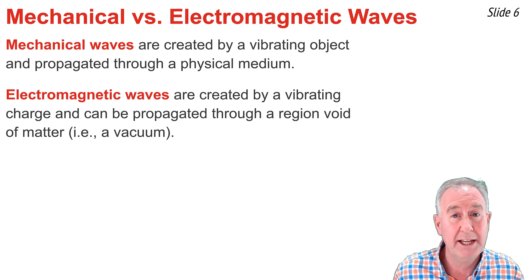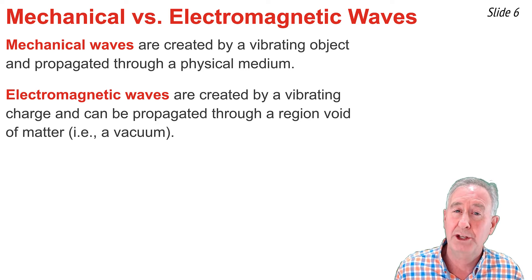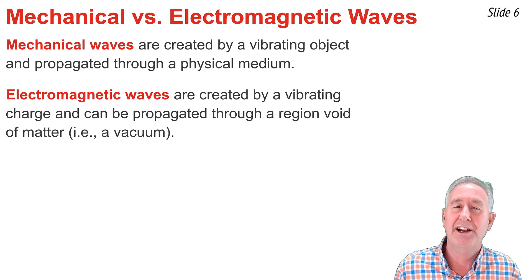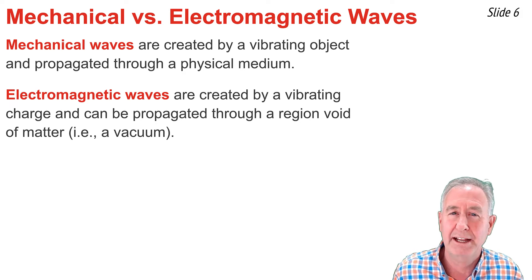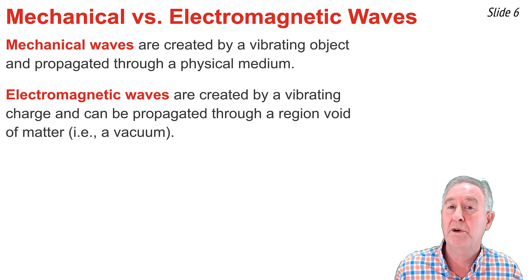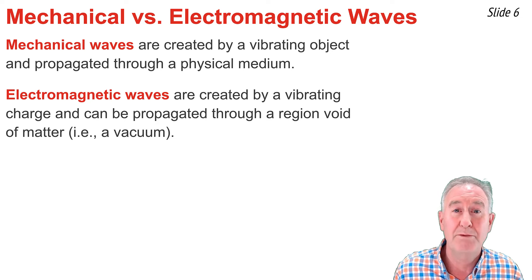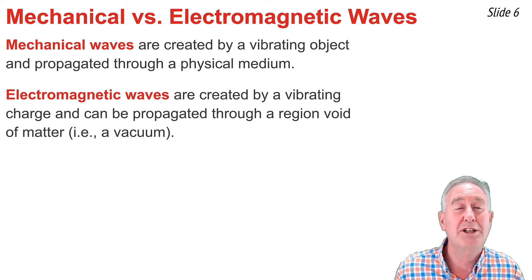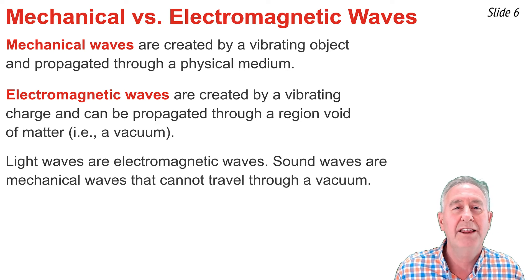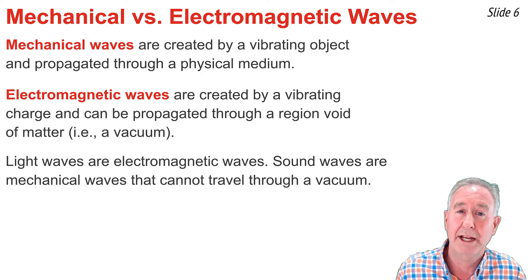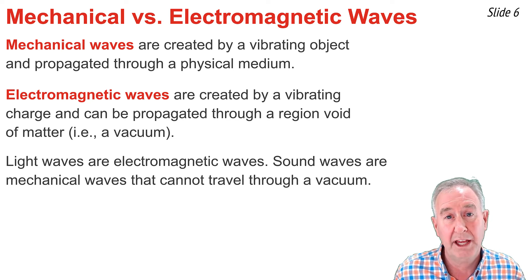On the other hand, electromagnetic waves are created by a vibrating charge. This creates an oscillating electric and magnetic field that can travel through a physical material, but also can travel through a region void of matter. That is, electromagnetic waves can travel through a vacuum. A light wave is an electromagnetic wave.